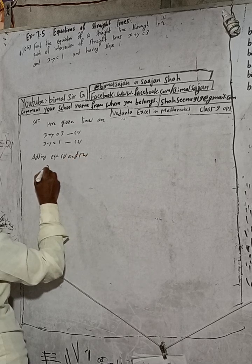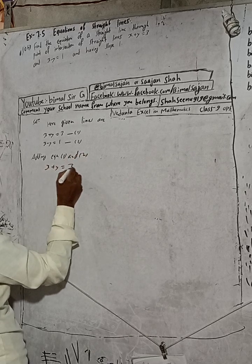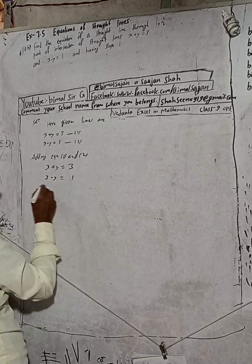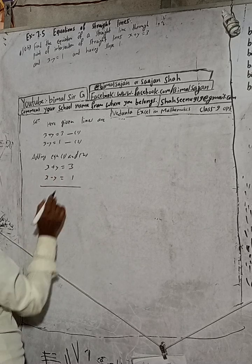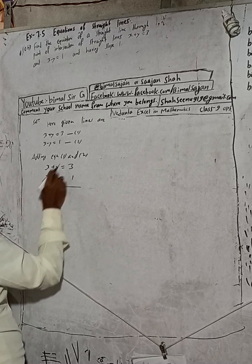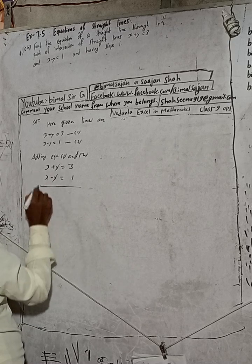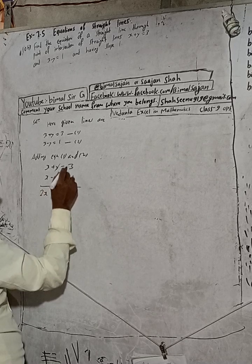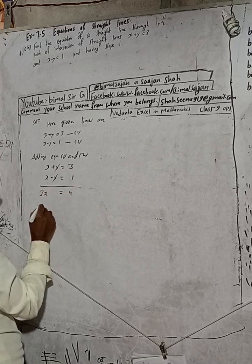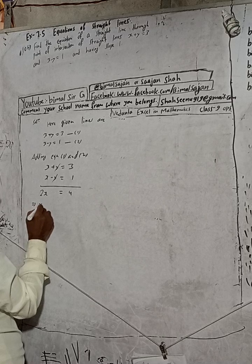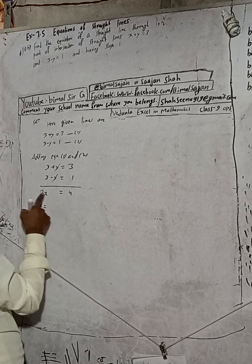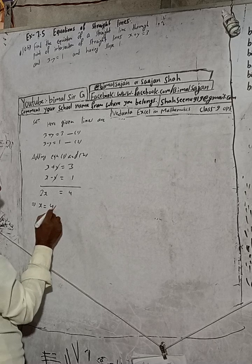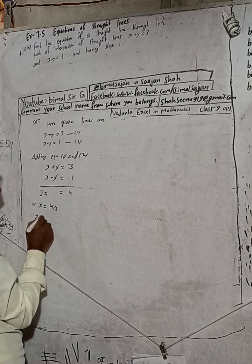Adding equation 1 and equation 2: x plus y equals 3 and x minus y equals 1. Adding them, the y and minus y cancel. We get 2x equals 4, which implies x equals 4 divided by 2. Therefore x equals 2.